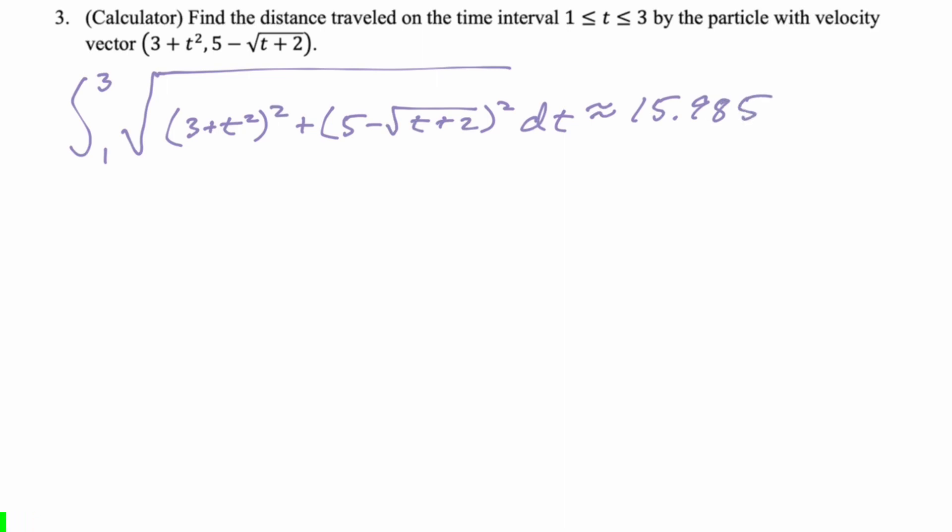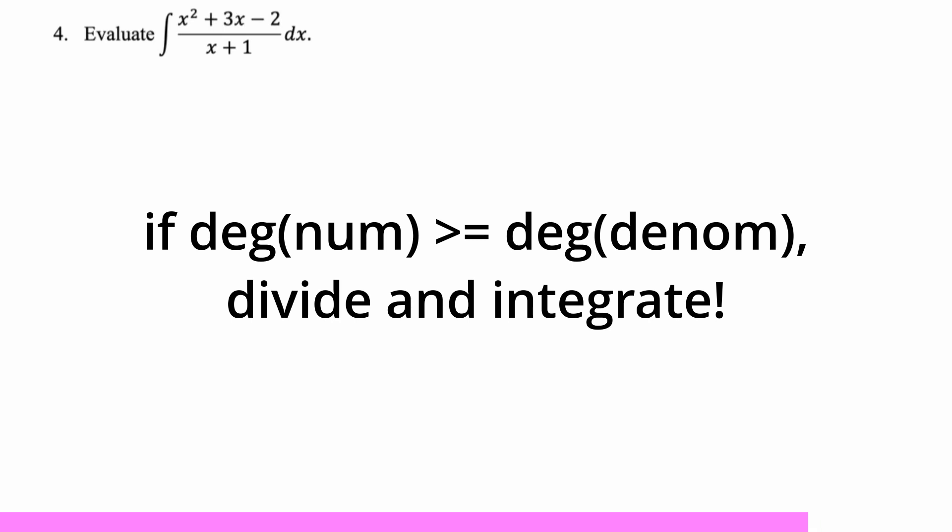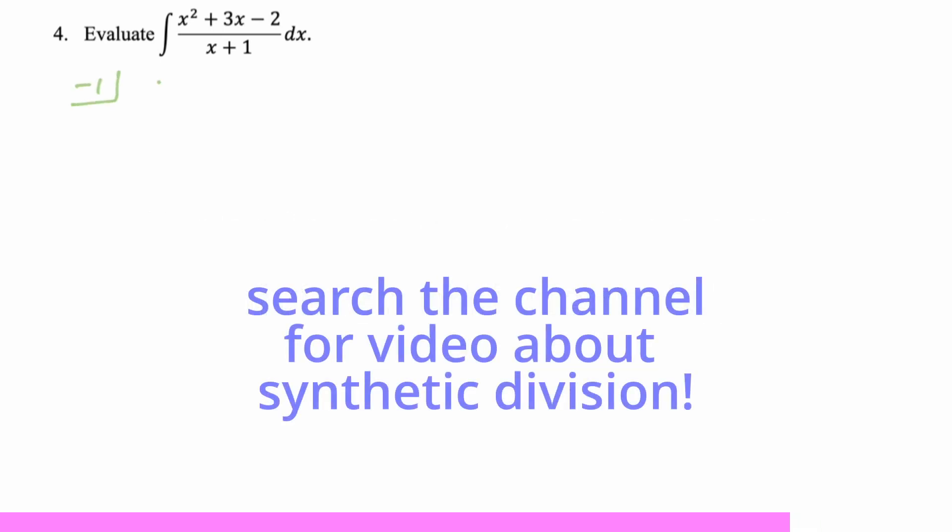All right, let's take a look at the next one. Evaluate the integral of x squared plus 3x minus 2 over x plus 1. And I don't know. This looks kind of relatively simple as far as these things go. Usually we have a quadratic in the denominator. And then we have to think, like, complete the square, use substitution, arc tan. Like, what's going on? Partial fractions. In this case, it's just divide and integrate. Because this is not a proper fraction, I'm going to use synthetic division. So negative 1, because that's the 0 of the denominator. And then the coefficients in the numerator are 1, 3, negative 2. Drop down, multiply, add down, multiply, add down. Got a good video on that if you're not sure how to do synthetic division.